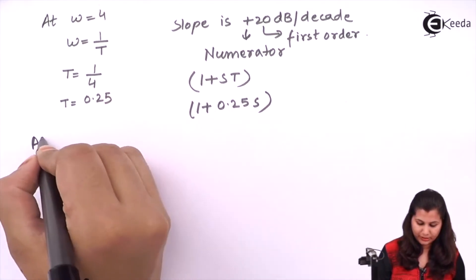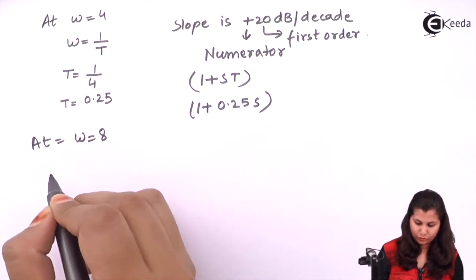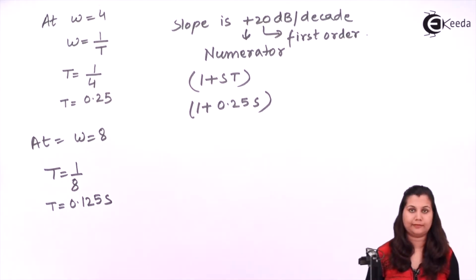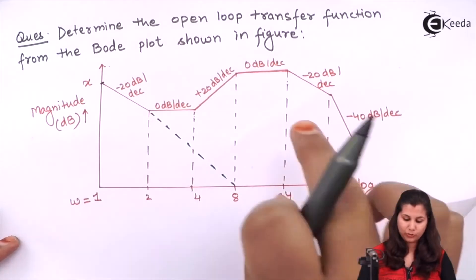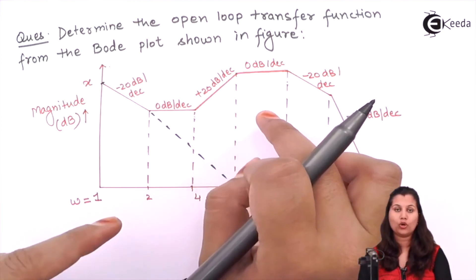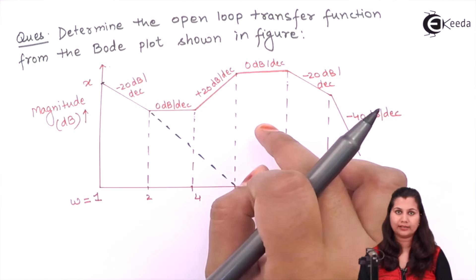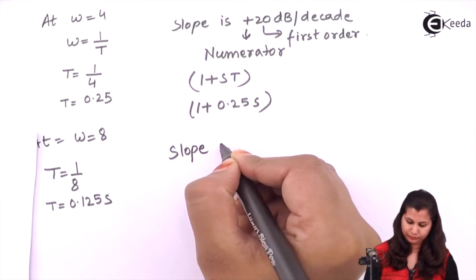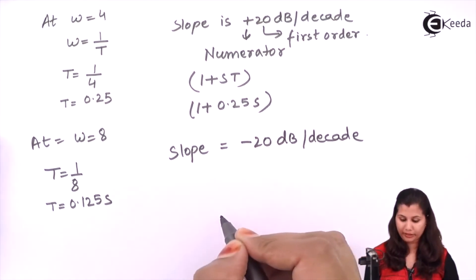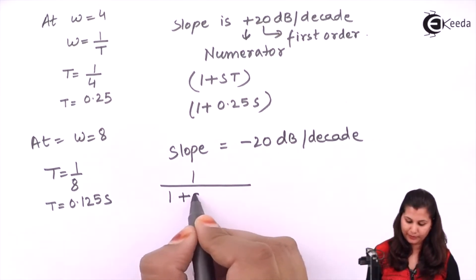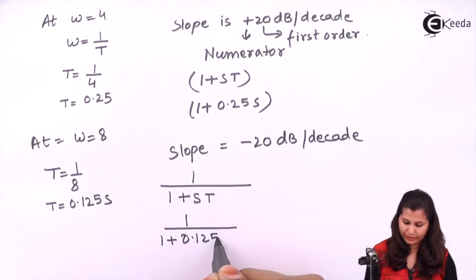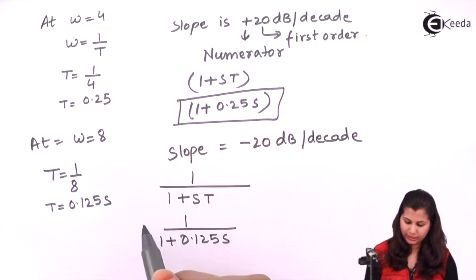At omega equals 8: T = 1/8 = 0.125. The slope changes from plus 20 to 0 dB per decade, meaning a change of minus 20 dB per decade. Minus means this factor is in the denominator, so it is of the form 1/(1 + sT), giving 1/(1 + 0.125s).